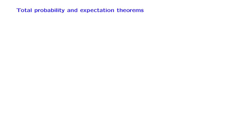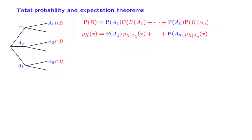We now continue with the development of continuous analogues of everything we know for the discrete case. We have already seen a few versions of the total probability theorem — one version for events and one version for PMFs. Let us now develop a continuous analog.